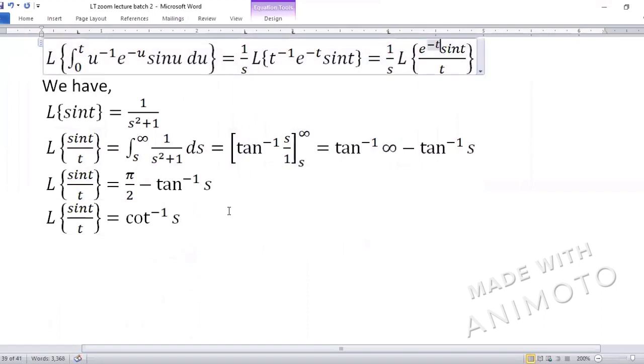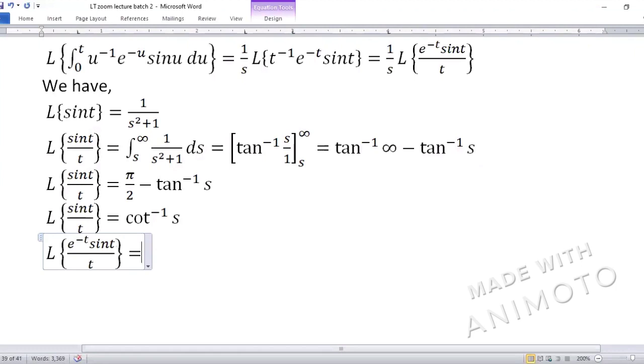Ab question mein ek or part hai e raise to minus t. Toh we multiply e raise to minus t on the left hand side. e raise to minus t sin t divide by t. Due to which what happens is first shifting property gets applied. Matlab s ki jagha change a jayega s plus 1 ka. Finally laplace e raise to minus t sin t by t complete ho gya.